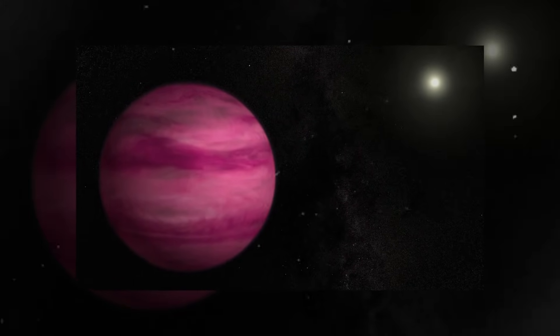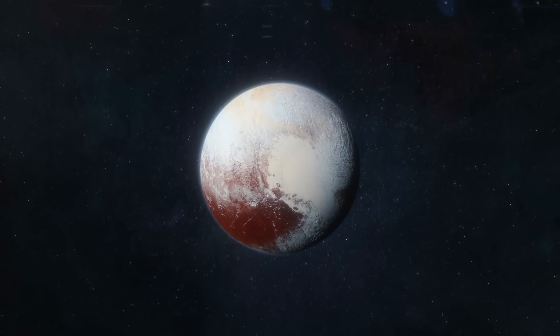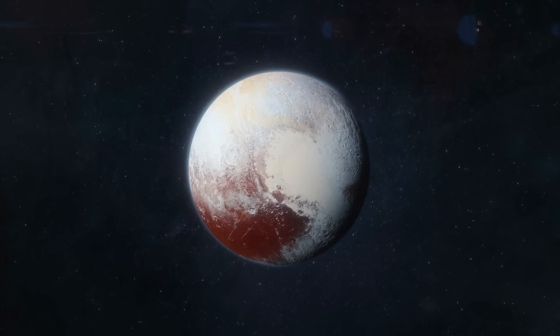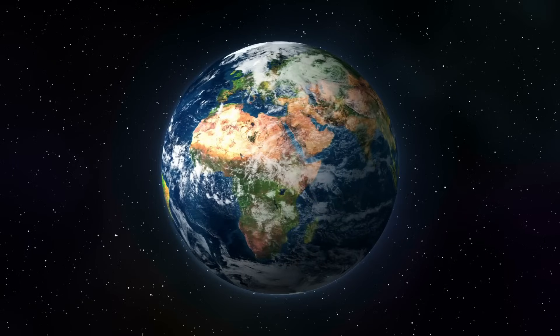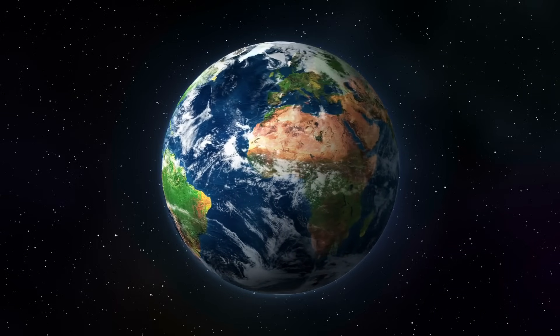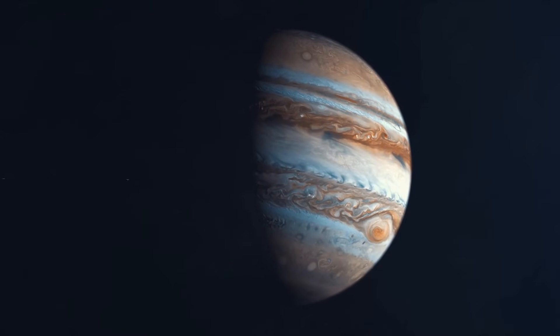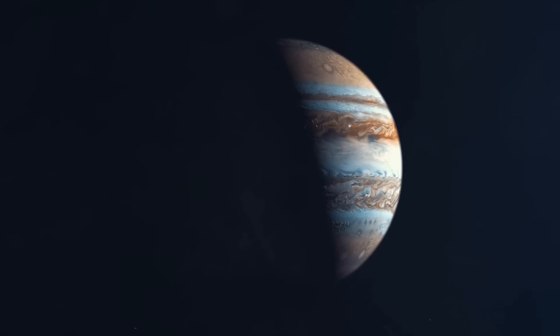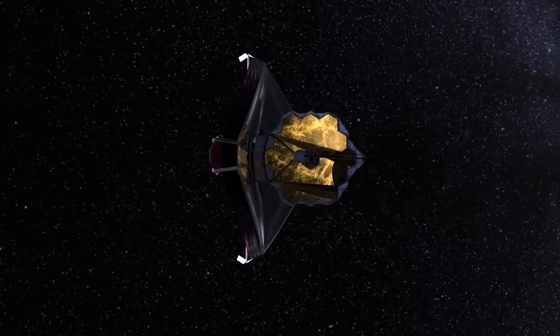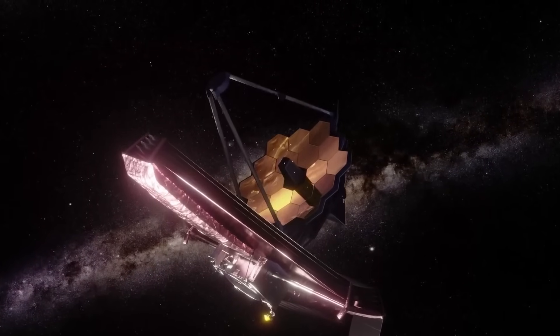HIP 65426b, one of the exoplanets observed by James Webb, stands out for its extraordinary characteristics, particularly its positioning 100 times farther from its star than Earth is from the Sun. To understand this difference, consider that Pluto, in our solar system, is only 40 times farther from the Sun than Earth. Now imagine HIP 65426b, an immense gas giant much larger than Jupiter, approximately 12 times its size. Despite the fleeting nature of the ghost galaxy in the night sky, James Webb's infrared camera captured its glow with clarity.